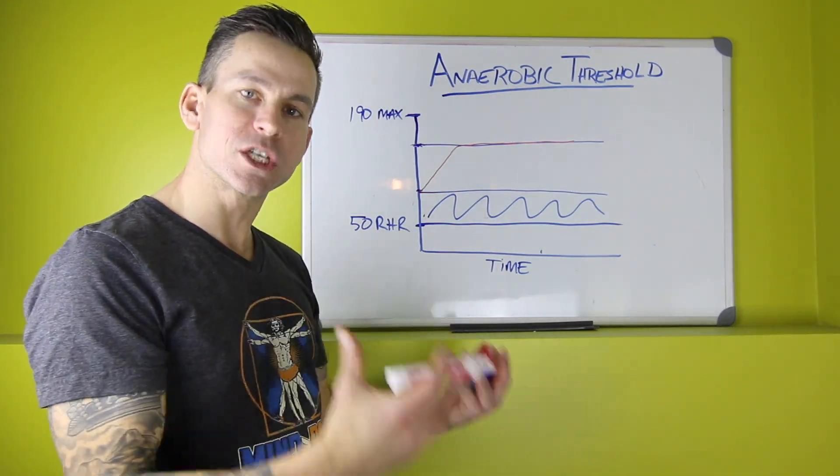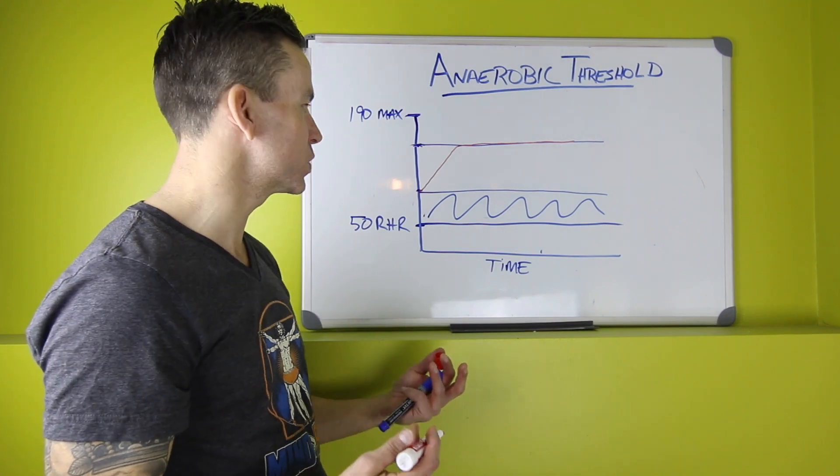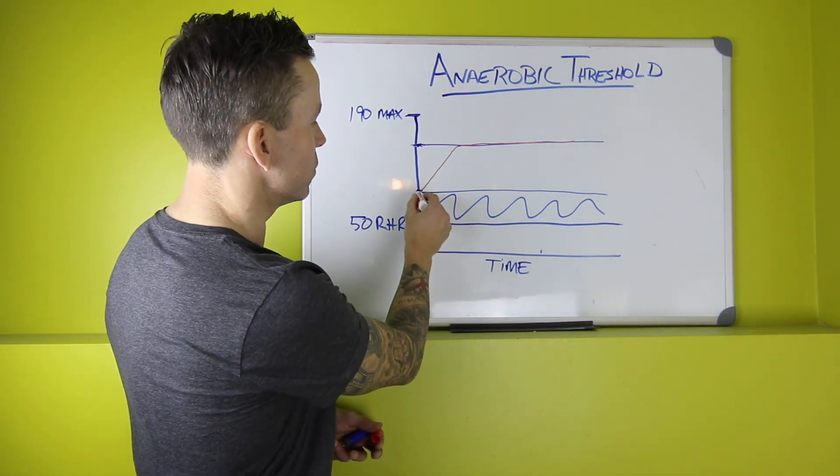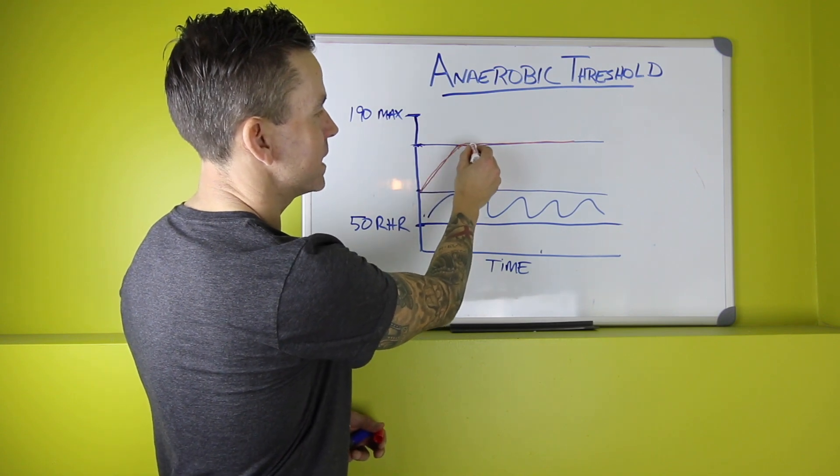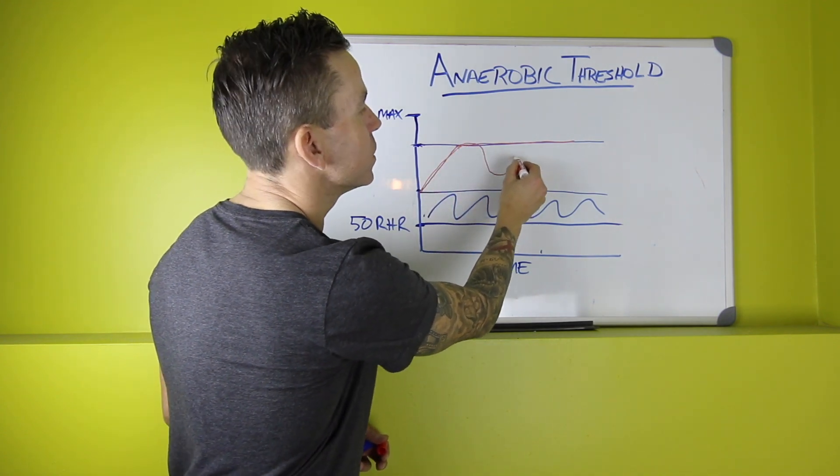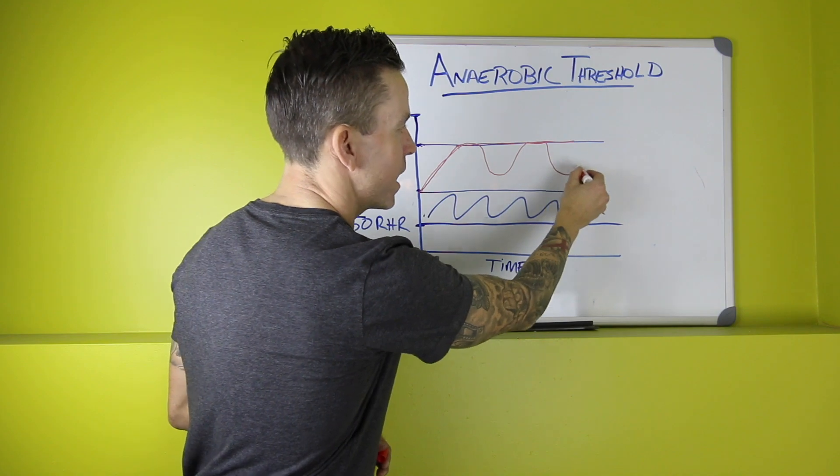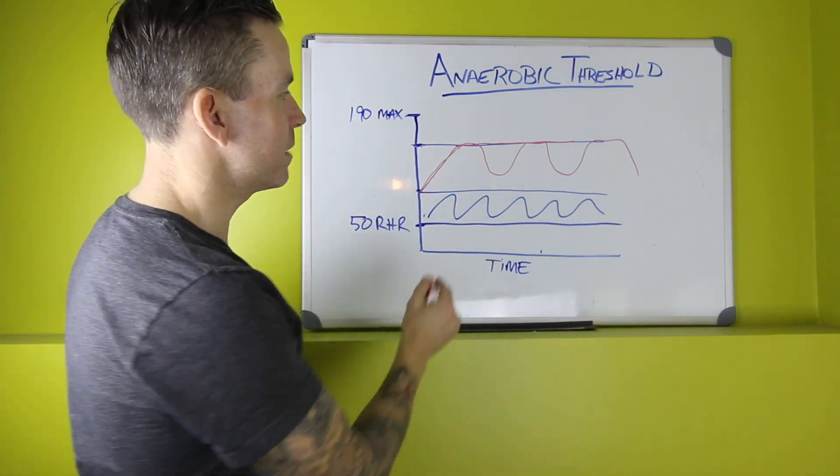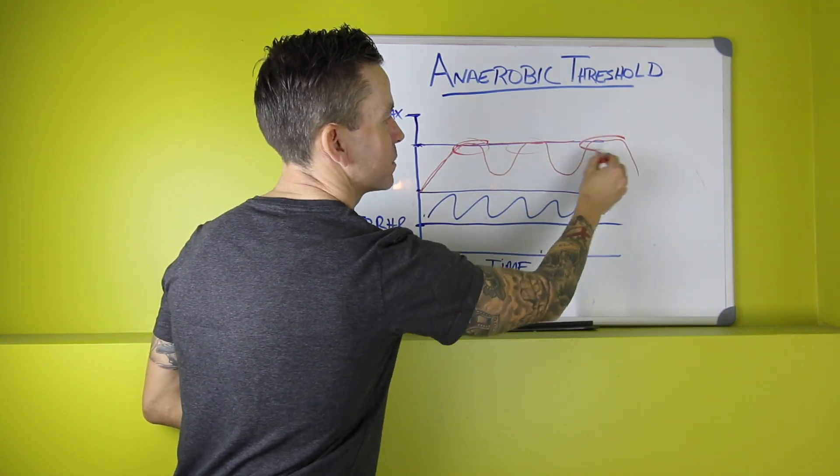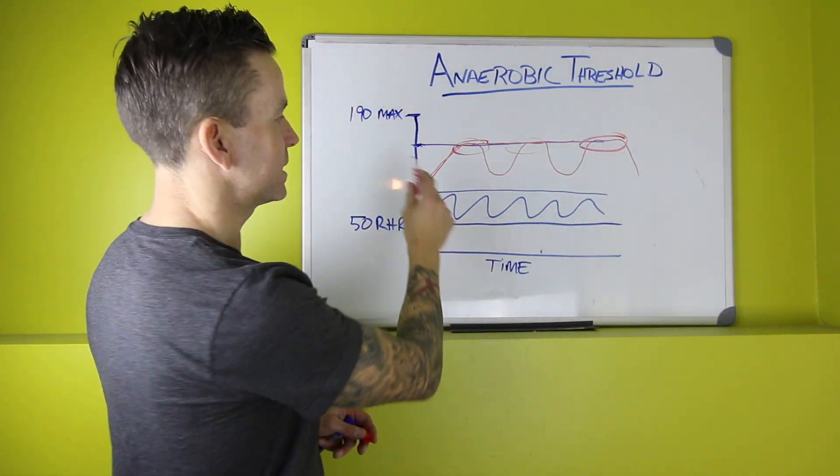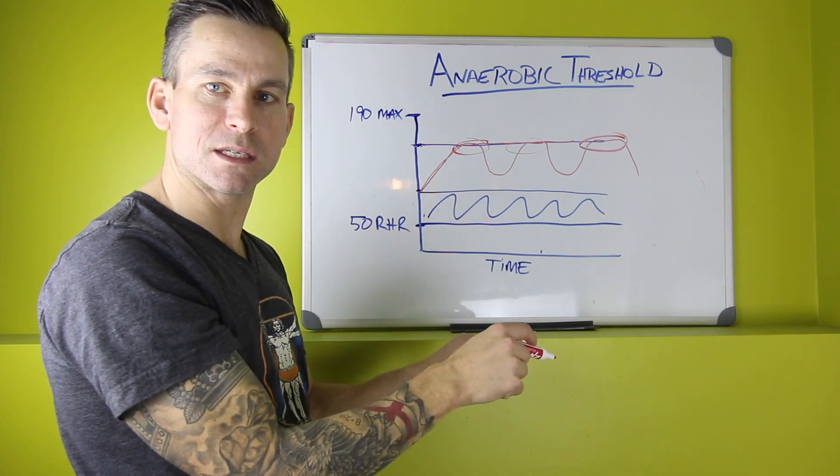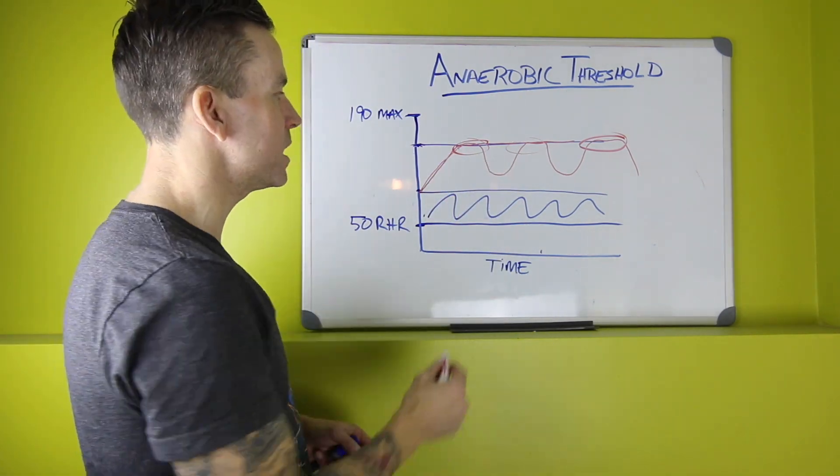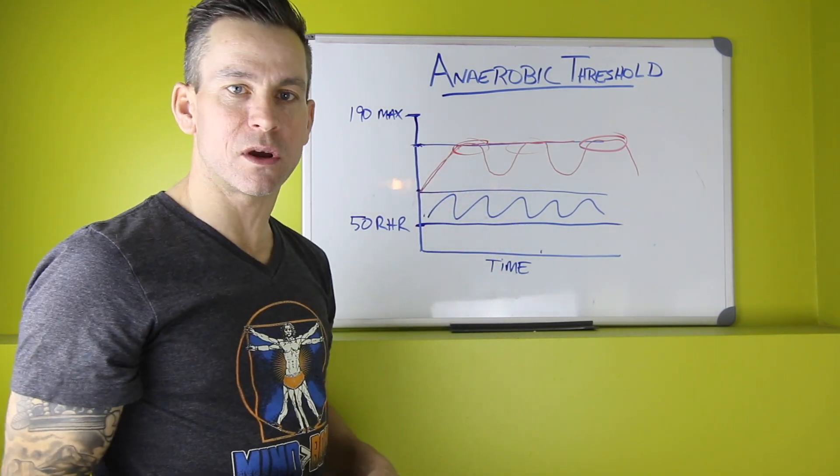Or you might look at it from like an interval, doing repeats at that intensity as well. A classic workout might be mile repeats where you get up to that intensity, you take a break, you do another interval, take a break and another interval and so on. You might spend say six minutes running and three minutes in a rest, then six more minutes, or eight and four, whatever that might be. You're resting for half as long as you're running, spending as much time possible at that threshold level.